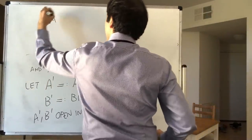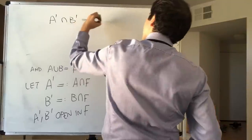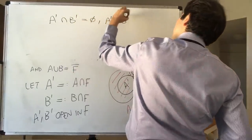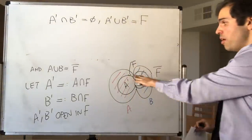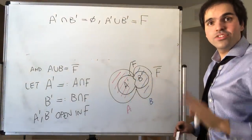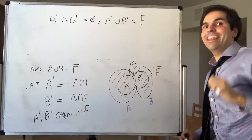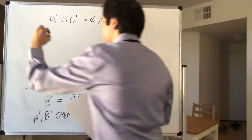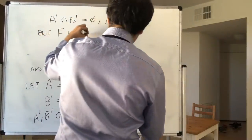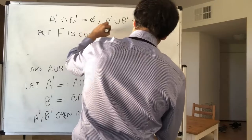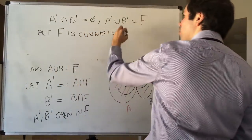But f is connected. So we have a contradiction unless one of A' or B' is empty. Since f is connected, one of A' or B' must be empty.